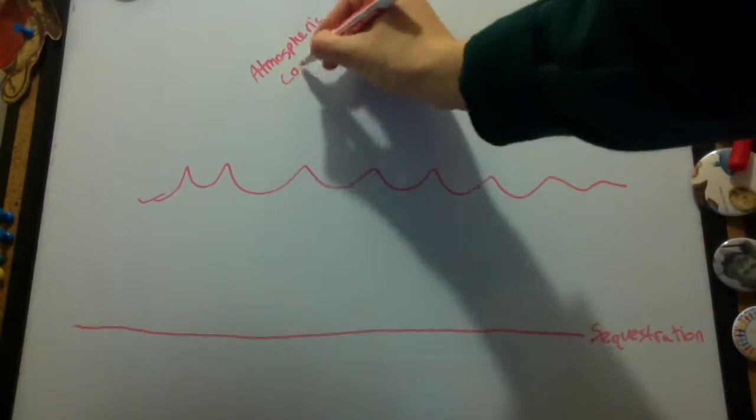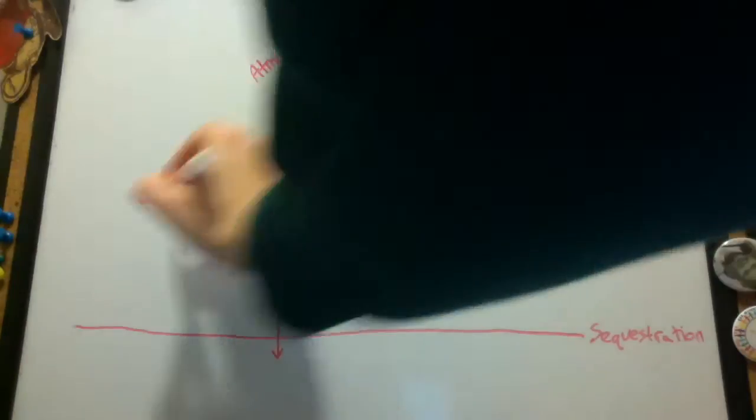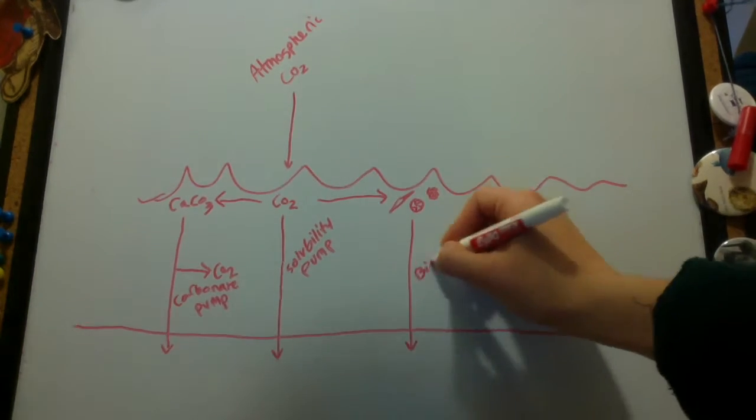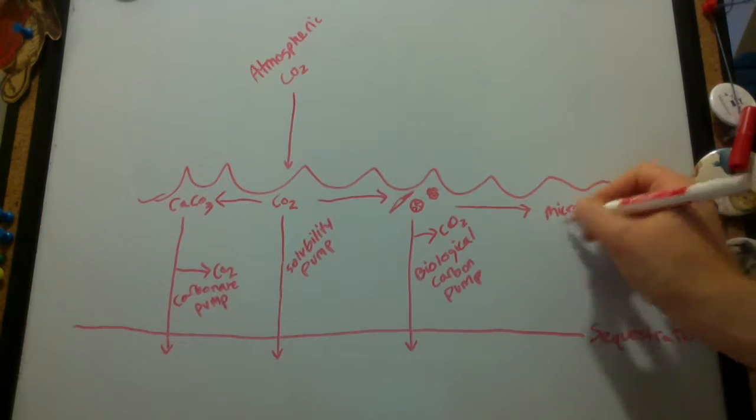Within the ocean, there are four conceptual carbon pumps that mix carbon, create a gradient, and are responsible for sequestering carbon deep in the ocean for thousands of years. The four pumps are the solubility pump, the carbonate pump, the biological carbon pump, and the microbial carbon pump.